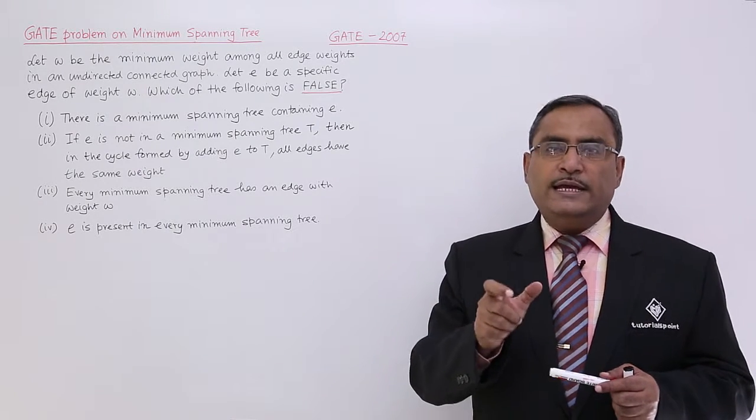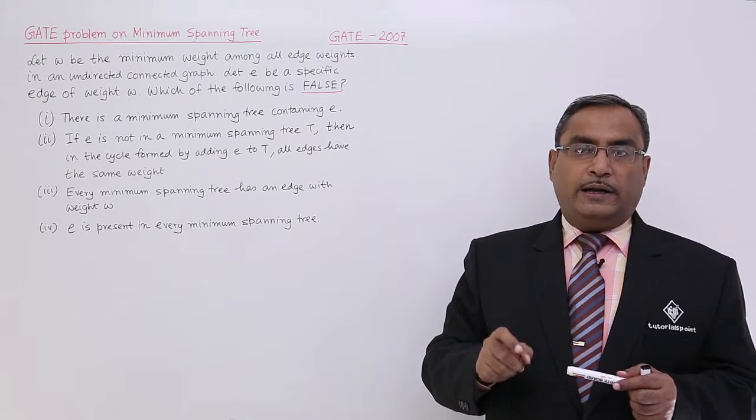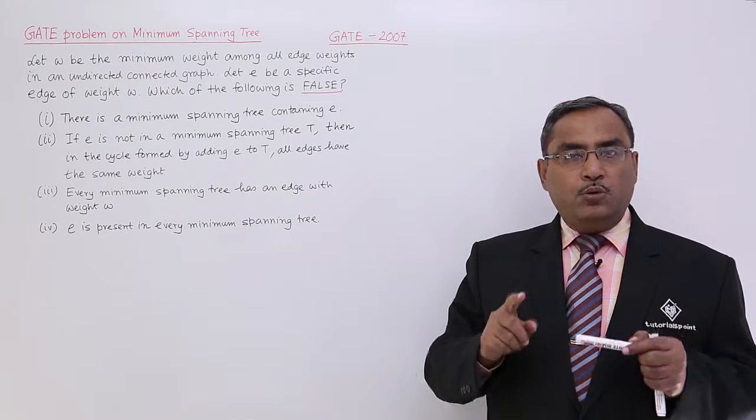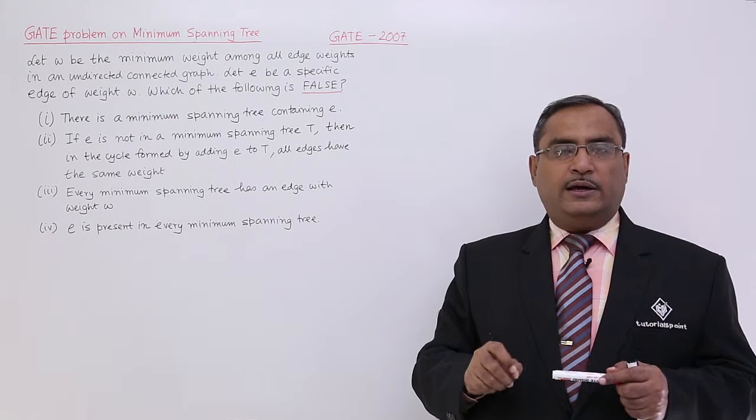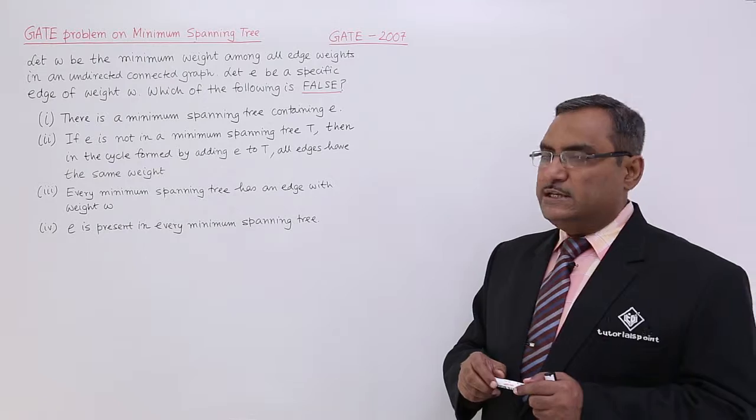But obviously, E is one of the edges having the weight W. That is true, but it does not indicate that W is unique in the edge weights. Now, which statement is false?